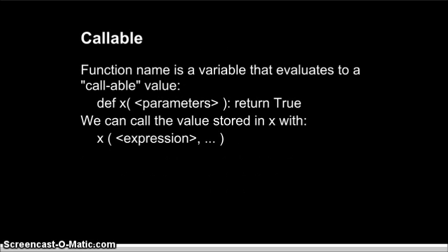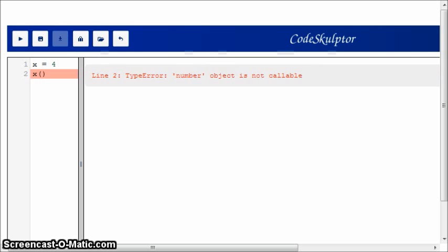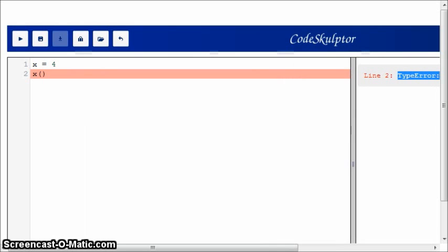So if a function is a variable, that means that it evaluates the value stored inside of it. That value is an object that is callable. Let's look at something that isn't callable. So, here we have x equals 4. And now I'm going to try and call x. And when I do, we'll reset that, we see an error. We see type error, number object is not callable. So there's this concept of something that is callable.